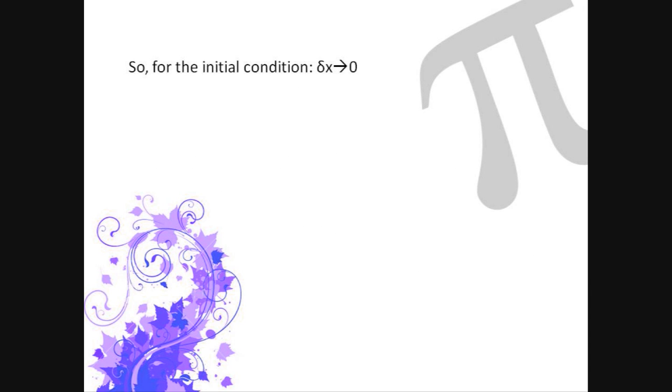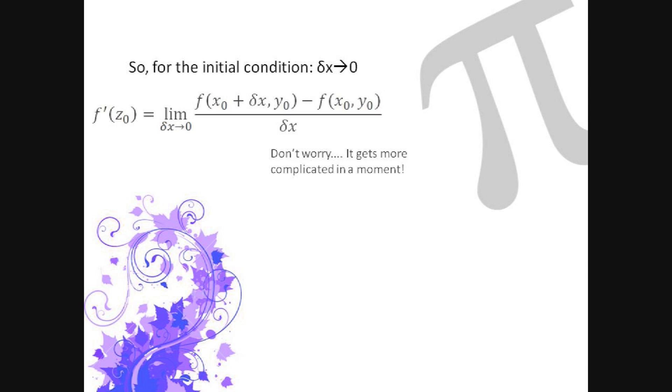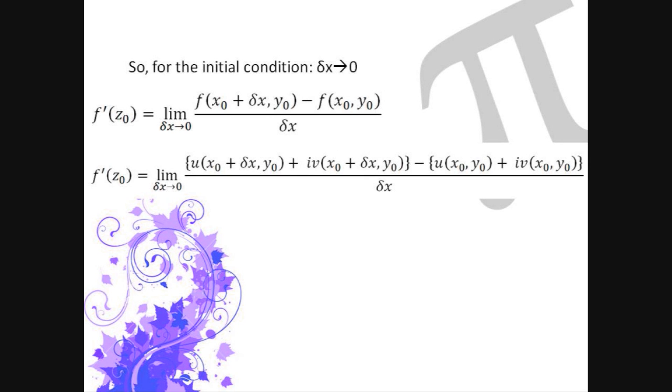So the initial conditions for when delta x tends to zero is this equation in front of me. And by putting them in both terms of u and v, by splitting up all the different complex functions in terms of u and v, you get this equation. All the real parts and all the complex parts can then be collected to give you this equation.